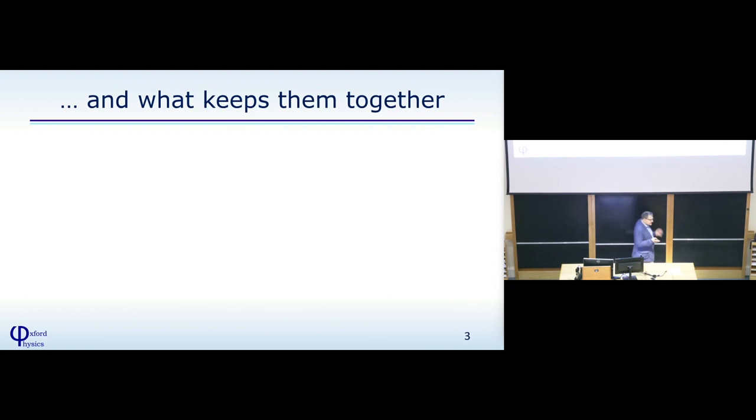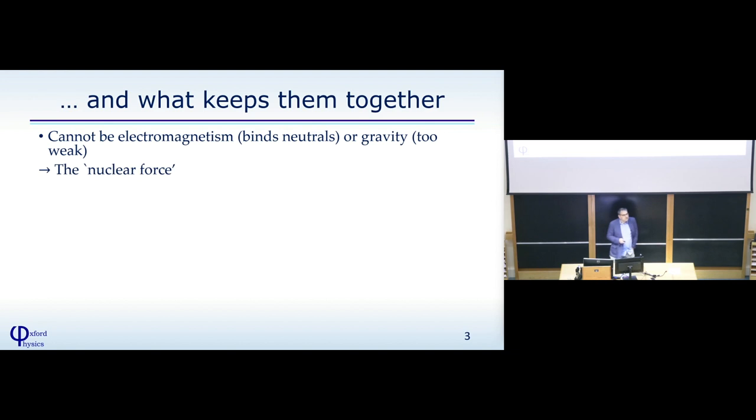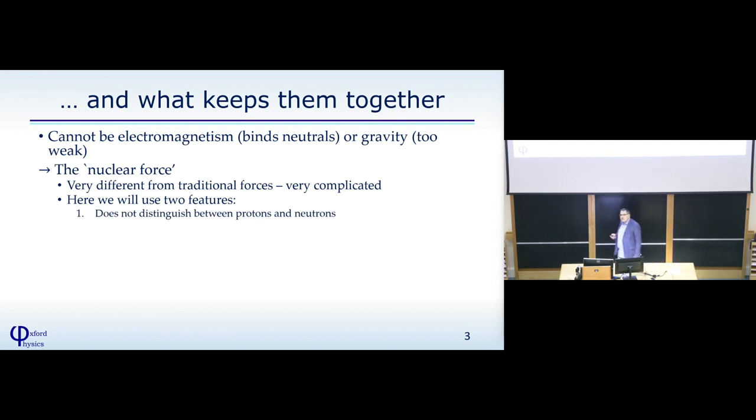The next thing we want to understand is what keeps those protons and neutrons together in the nucleus. It cannot be electromagnetism, because we are binding a neutral particle. It also cannot be gravity, because gravity is too weak. So none of our existing easily recognizable forces are of any relevance here, and we have to introduce a new force, a nuclear force. Nuclear force is fantastically difficult. Not even our undergraduates really learn how to deal with that one, and even very advanced physicists cannot really deal with it in a good way. But for the discussions here, I will use two very simple features. The first one is, this nuclear force doesn't distinguish between protons and neutrons. It treats them absolutely the same.